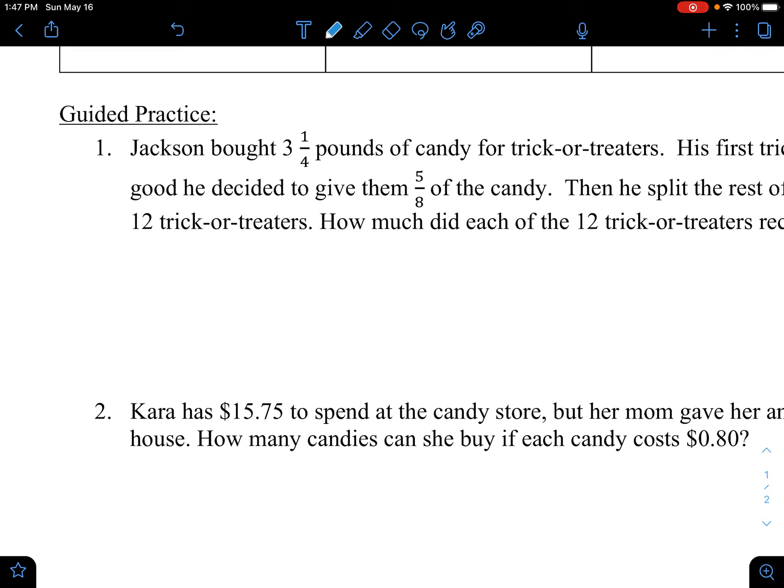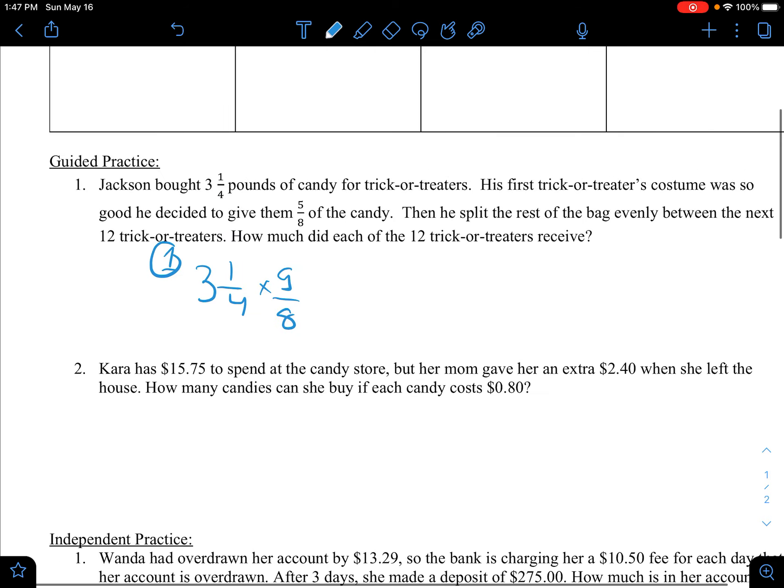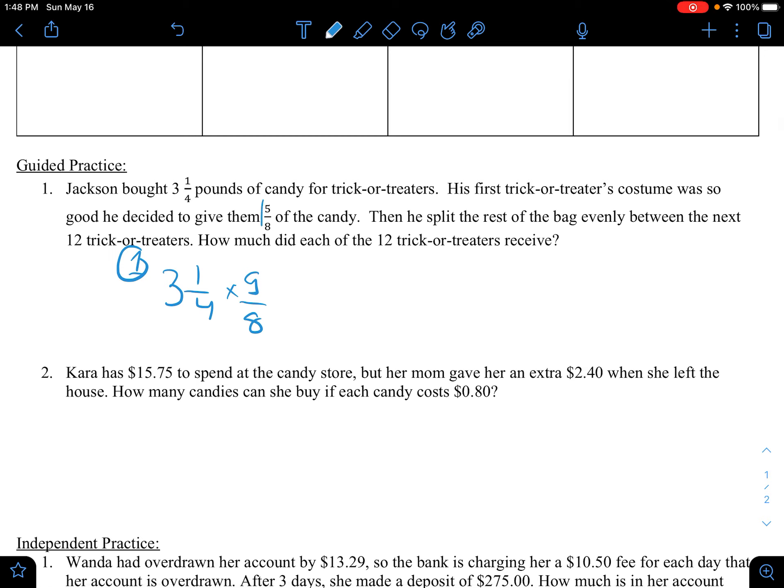So first you would do 3 1/4 times 5/8, because Jackson gave 5/8ths of the total amount of candy, which is 3 1/4 pounds of candy to the first trick-or-treater.